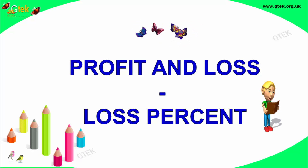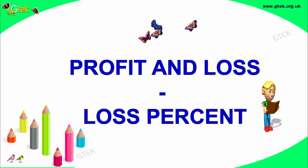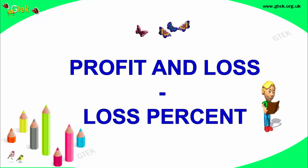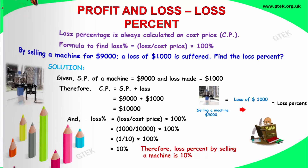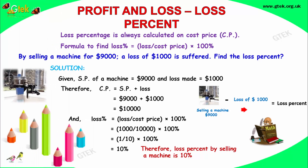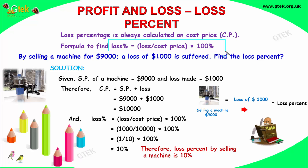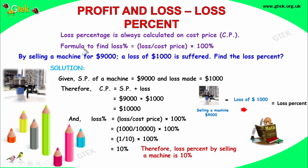Hello, welcome to Jita Company. Now we are looking into the profit and loss area, and particularly towards loss percentage. Loss percentage is always calculated on the cost price. The formula is: loss percentage is equal to loss divided by cost price, into 100%.